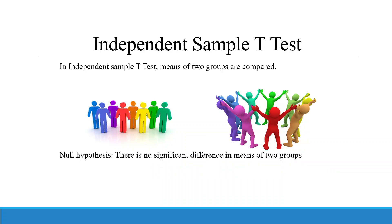Today we are going to discuss the independent sample t-test. Basically, our objective here is to compare the means of two groups, group 1 and group 2. So we are writing here our null hypothesis as: there is no significant difference in means of two groups.